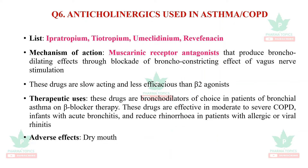Question six is anticholinergics used in asthma and COPD. The list includes ipratropium, tiotropium, aclidinium, and revefenacin — revefenacin being a new drug. Mechanism: muscarinic receptor antagonists that produce bronchodilatory effects through blockade of the bronchoconstricting effect of vagus nerve stimulation. They are slow-acting and less efficacious than beta-2 agonists. They are used as add-on therapy to beta-blocker therapy and are effective in moderate to severe COPD. Adverse effects include anticholinergic effects: dry mouth and blurred vision.